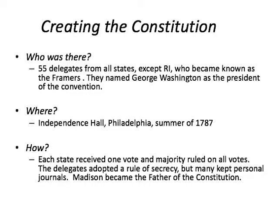So why create the Constitution? 55 delegates came from all the states except Rhode Island, and they became known as the Framers — they created or framed the new Constitution. They named George Washington as president of the convention, who was later named president of the United States. This was in Philadelphia in 1787. Each state received one vote, everything was majority, and they were being somewhat secretive about it — they didn't want people to know they were changing the government.